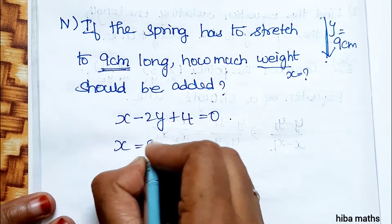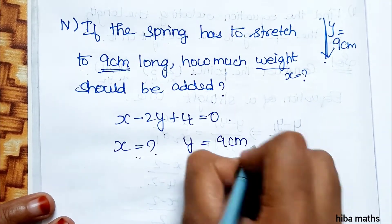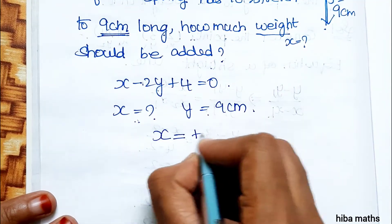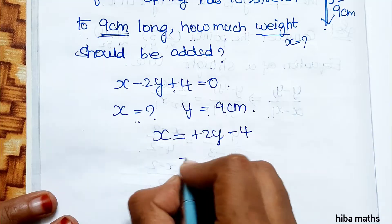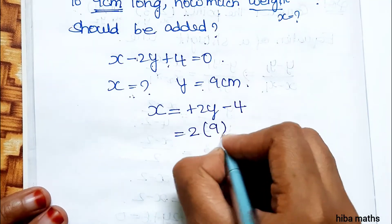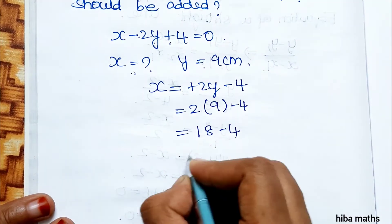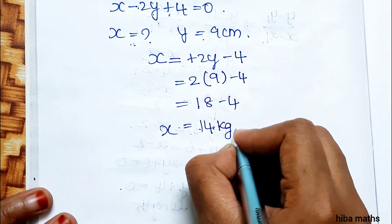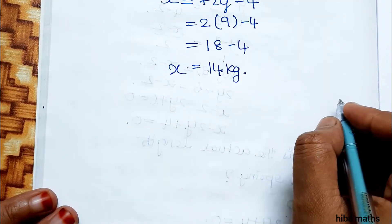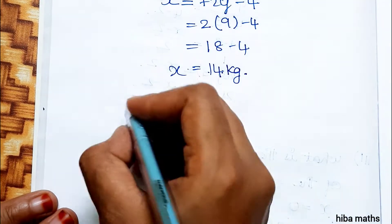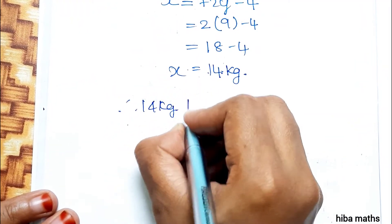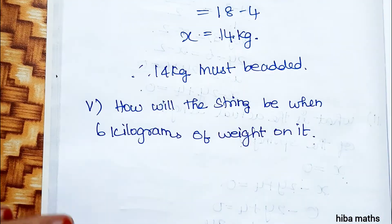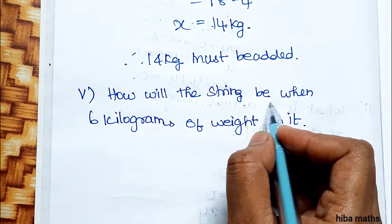Fourth sub-question: If the spring stretches to 9 cm long, how much weight is needed? Here y = 9 cm. Substituting into x − 2y + 4 = 0: x = 2y − 4 = 2(9) − 4 = 18 − 4 = 14. Therefore 14 kg of weight must be added for the spring to stretch to 9 cm.